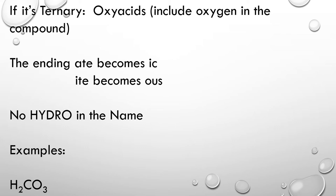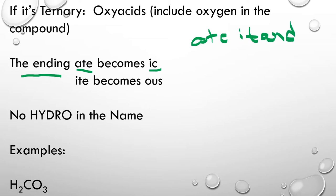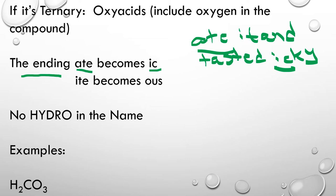If it is ternary, you've got an oxy acid. That means it's an acid that includes oxygen in the compound, and it's going to be a polyatomic ion. The rules are: the ending -ate — so if you have sulfate, carbonate, or any of the -ates on the polyatomic ion chart — becomes -ic. Easy way to remember: 'I ate it and it tasted icky.' And -ite becomes -ous. So think: 'don't bite us.' So -ite → -ous, -ate → -ic.